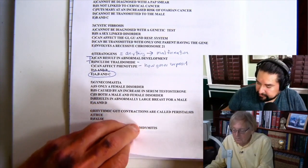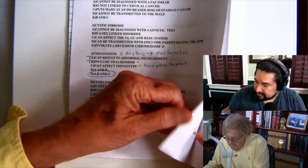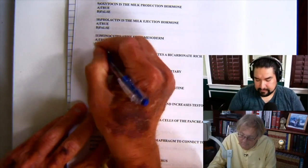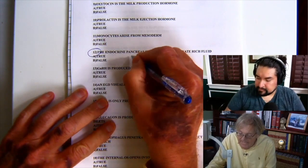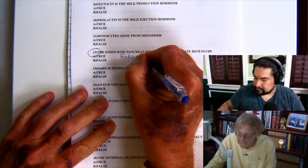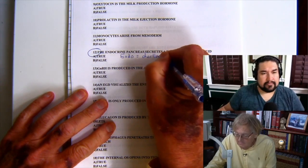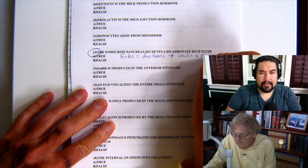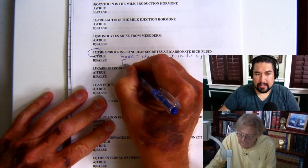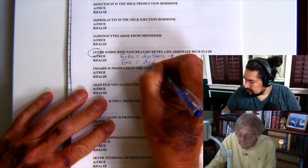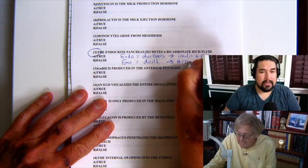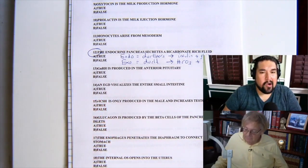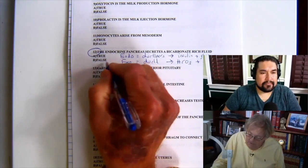Number 12 is about the difference between endocrine and exocrine. It says the endocrine pancreas secretes a bicarbonate-rich fluid. The endocrine pancreas is ductless and secretes insulin and glucagon. The exocrine pancreas is ducted and secretes HCO3 — bicarbonate — plus amylase, an enzyme to break down starches. So the statement is false: it's the exocrine pancreas that secretes bicarbonate.